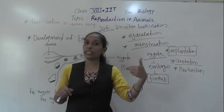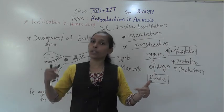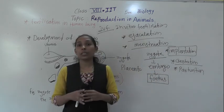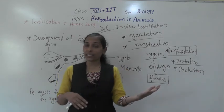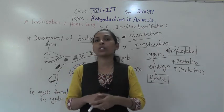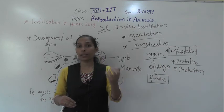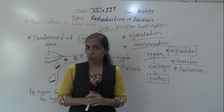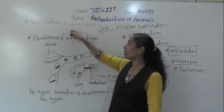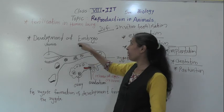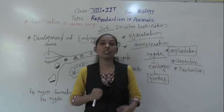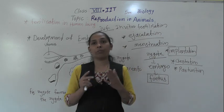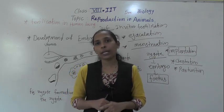Inside the egg shell the development of the chick takes place, and once development is complete, the chick breaks the shell and comes out — that process is called hatching. Similarly, certain other insects and birds also follow the same process: the mother lays eggs, provides warmth, and after a certain period the babies come out through hatching. So today we discussed fertilization in human beings, development of the embryo, IVF, and fertilization and embryo development in the hen. Thank you.